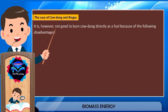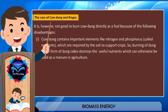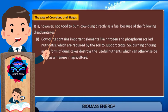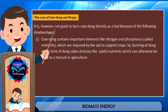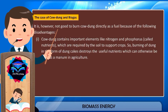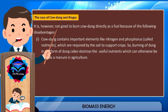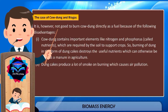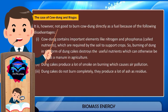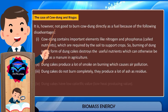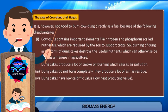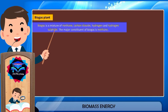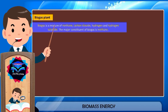It is not good to burn cow dung directly as a fuel because of the following disadvantages. One: cow dung contains important elements like nitrogen and phosphorus, called nutrients, which are required by the soil to support crops. So burning dung in the form of dung cakes destroys the useful nutrients which can otherwise be used as manure in agriculture. Two: dung cakes produce a lot of smoke on burning, which causes air pollution. Three: dung cakes do not burn completely and produce a lot of ash as residue. Four: dung cakes have low calorific value, or low heat-producing value.